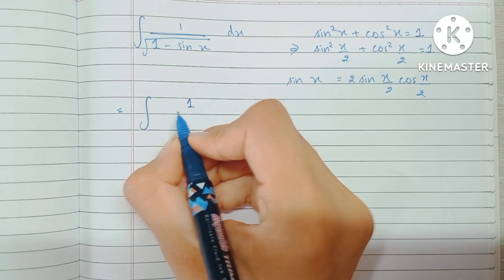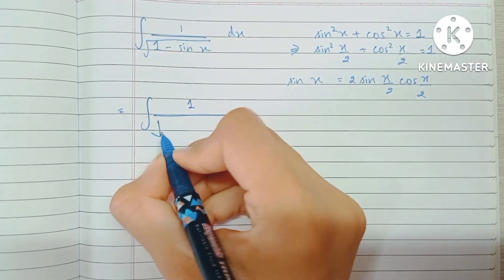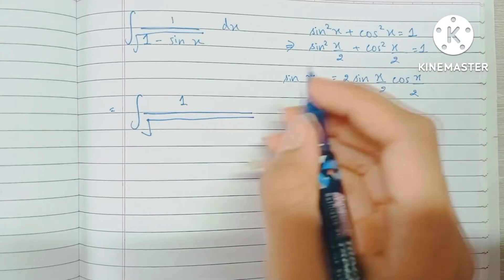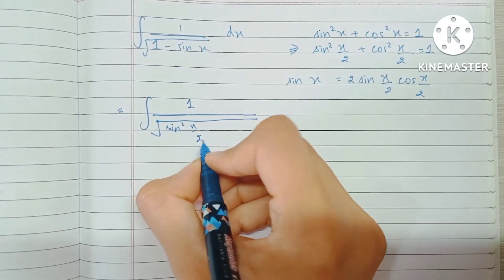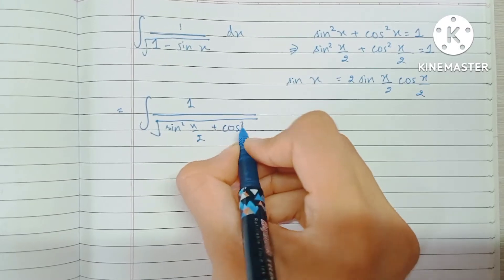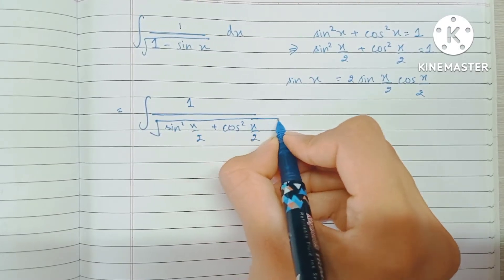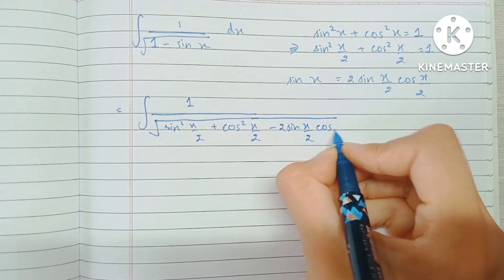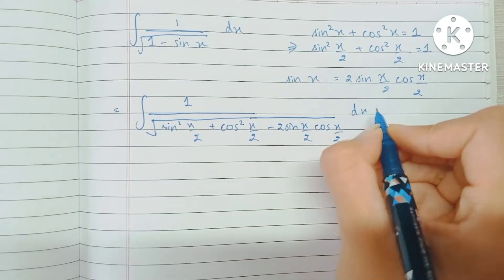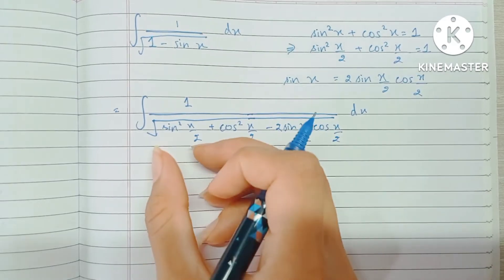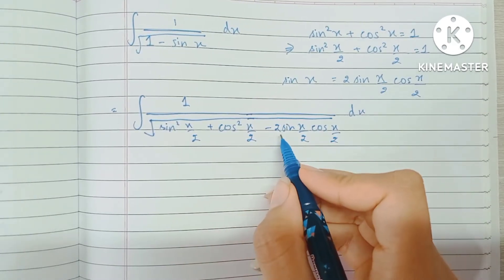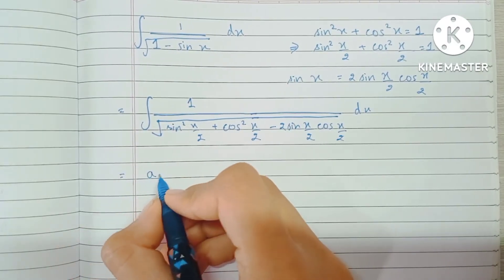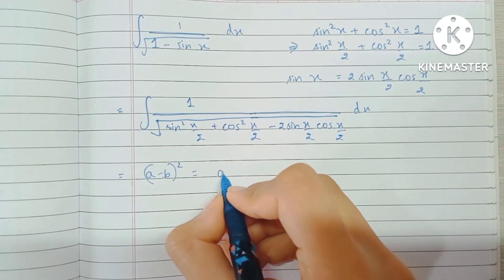So we have 1 upon root of: this 1 can be written as sine squared(x/2) plus cos squared(x/2), and sine x can be written as 2 sine(x/2) cos(x/2). We can see that we have a square plus another square minus 2 times the first and second terms — this is the expansion of (a minus b) whole squared.